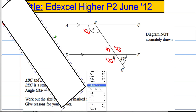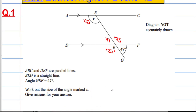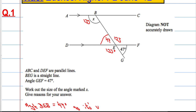So let's see if we can fill in or give reasons for our answer. I'm going to say angle DEB equals 47 degrees as it's vertically opposite to angle GEF.